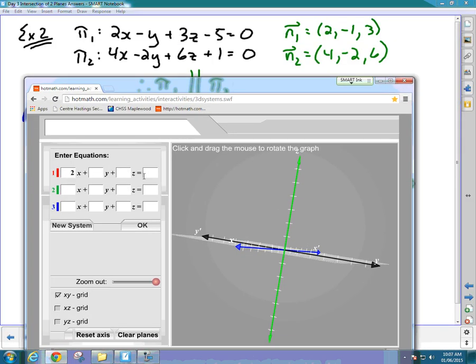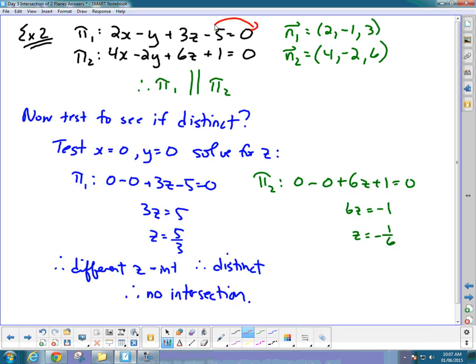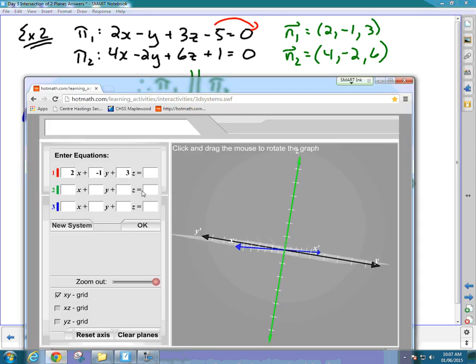We're going to go 2x-y+3z, and you see how this is -5. I'm going to move this -5 over to this side and make it +5 so that it's in the form that the website requires.